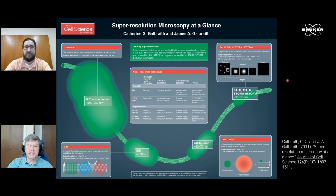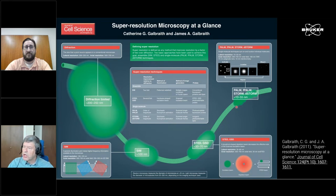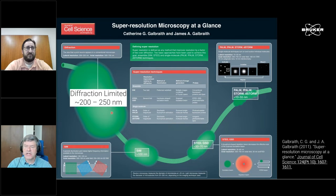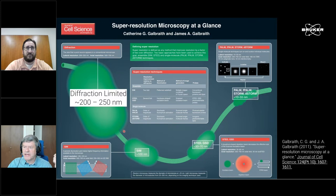Super resolution is very popular for good reason. To put it into context, I like to use this poster from an excellent review by the Galbraiths. In the background you see a microtubule as you would see it in an electron microscope — it's about 25 nanometers in diameter. If you look at it with a very good diffraction-limited microscope, such as a high-end confocal, this structure gets blurred by about a factor of ten due to the diffraction limit, so the 25-nanometer microtubule appears somewhere between 200 and 250 nanometers.